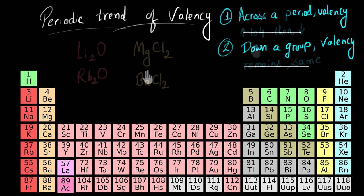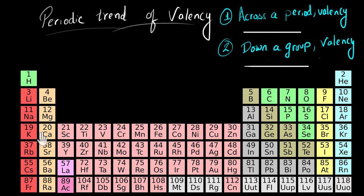Now let's summarize the video. We saw how valency changes as we go across a period and as we go down a group, and we also saw the reasons for that. I hope you remember what the patterns were — if not, please go back and watch the video again.